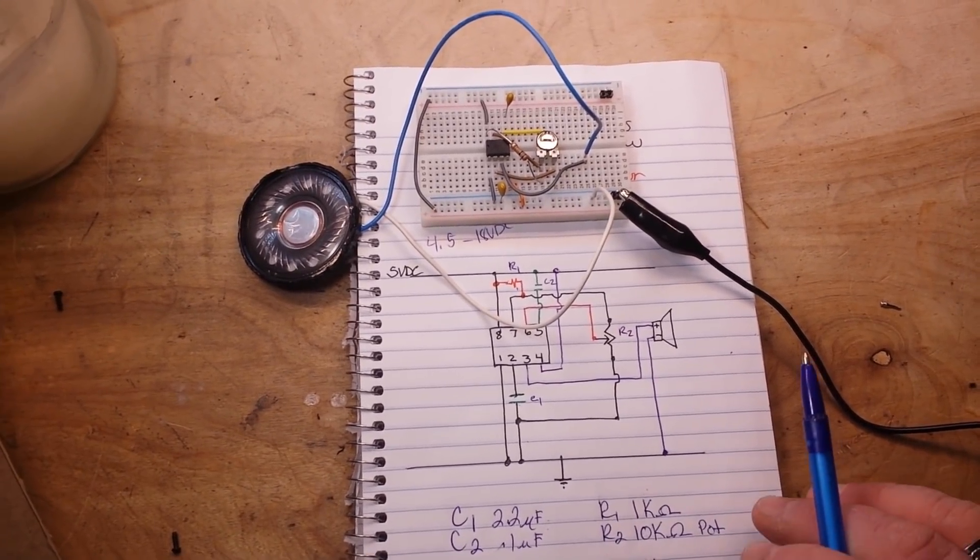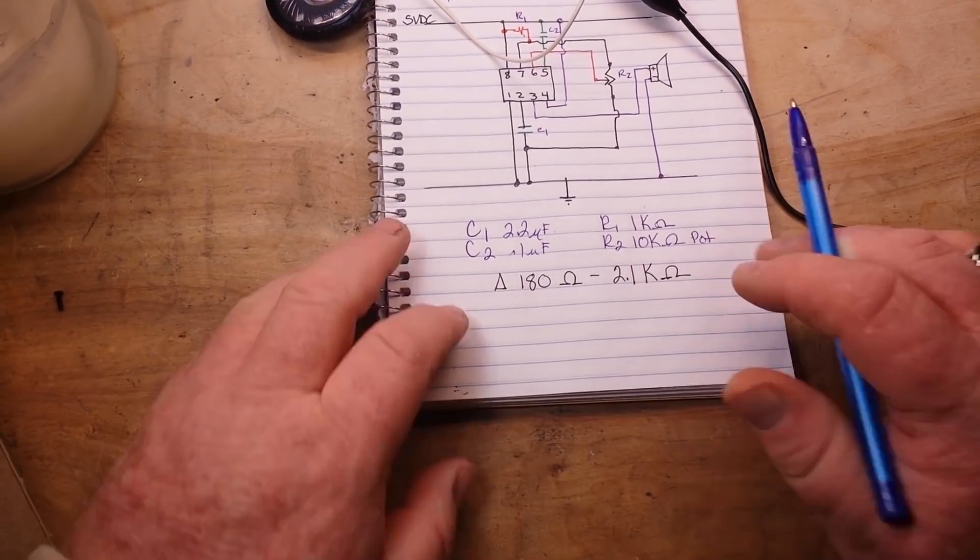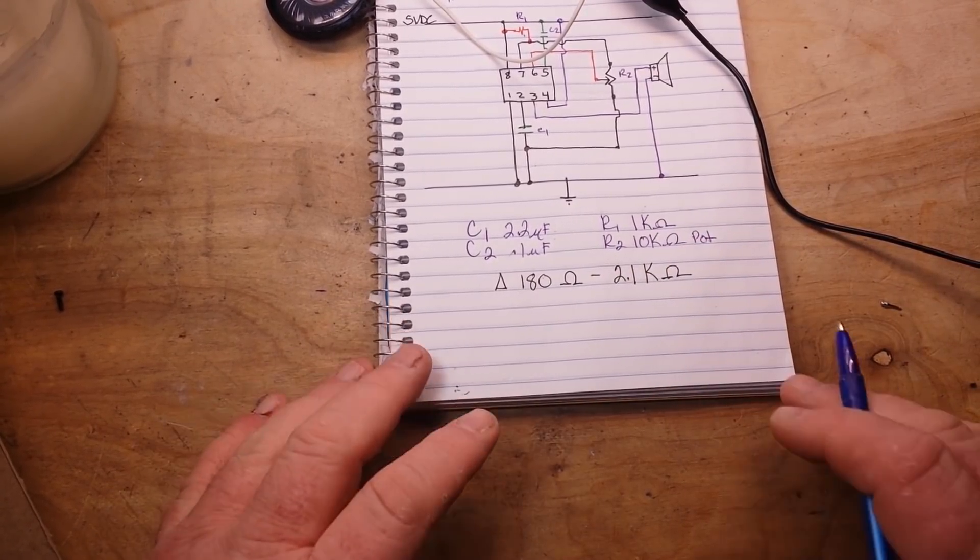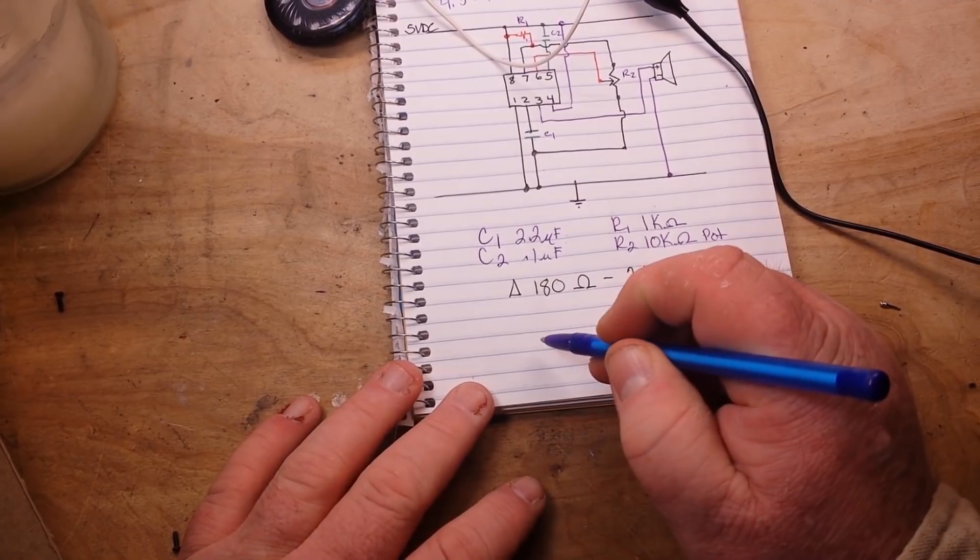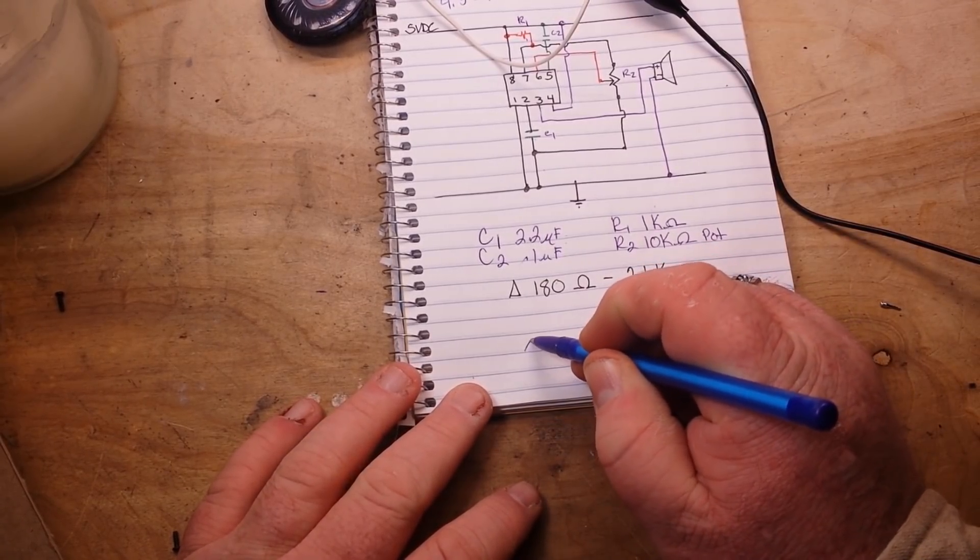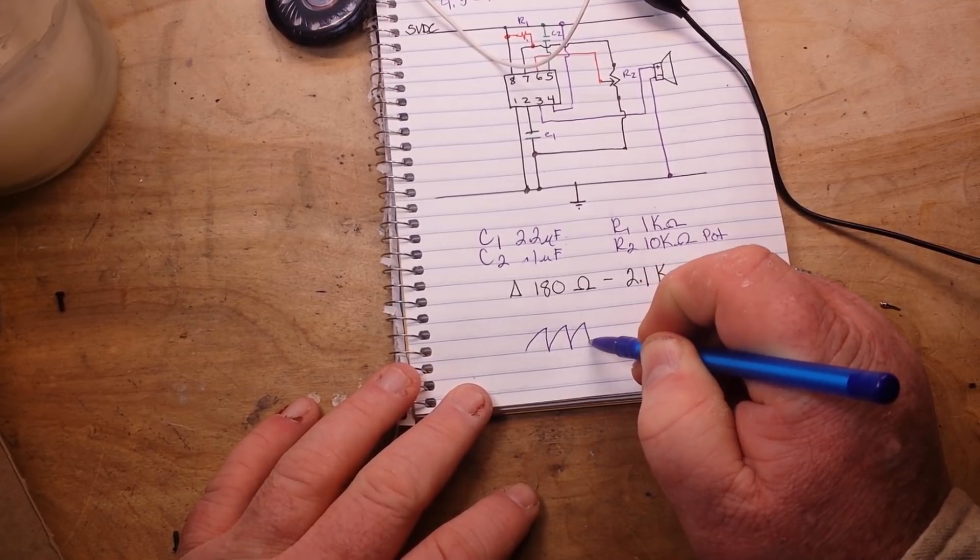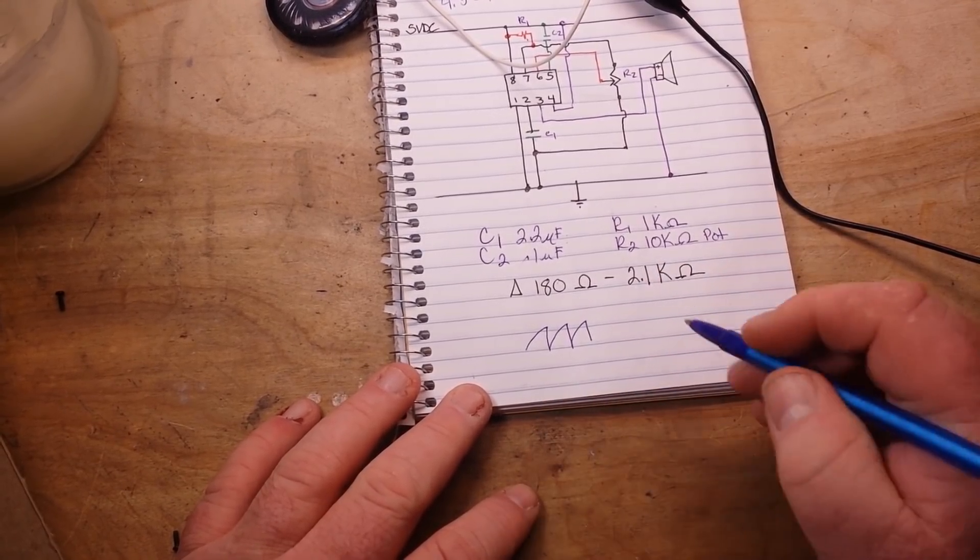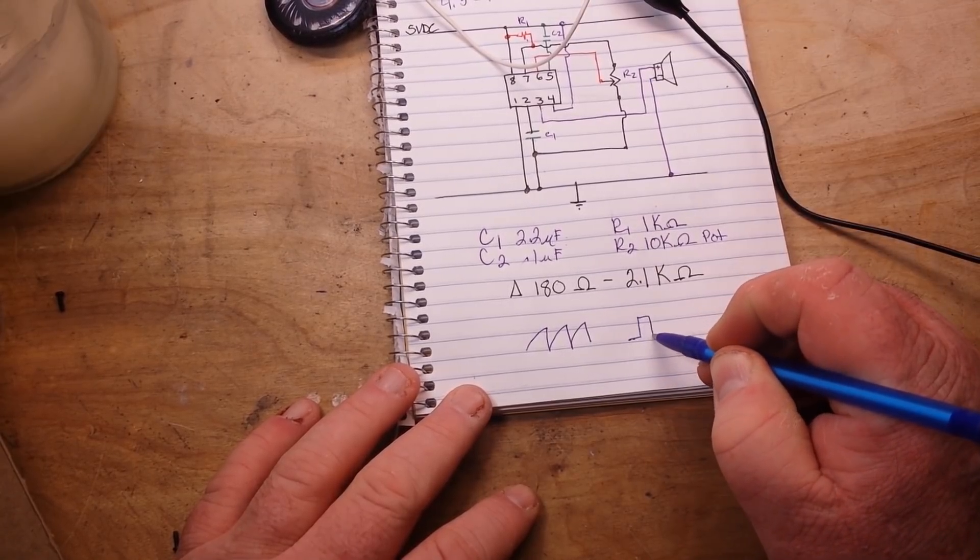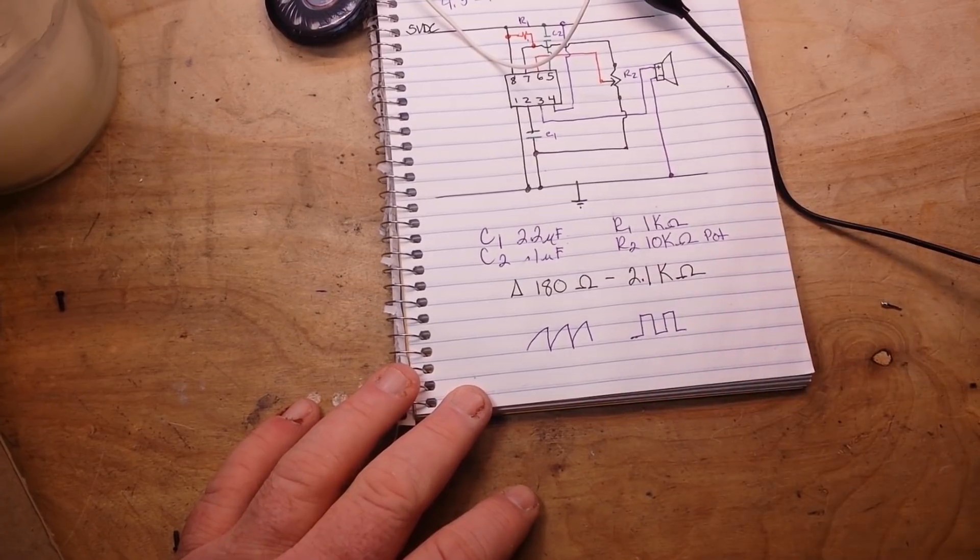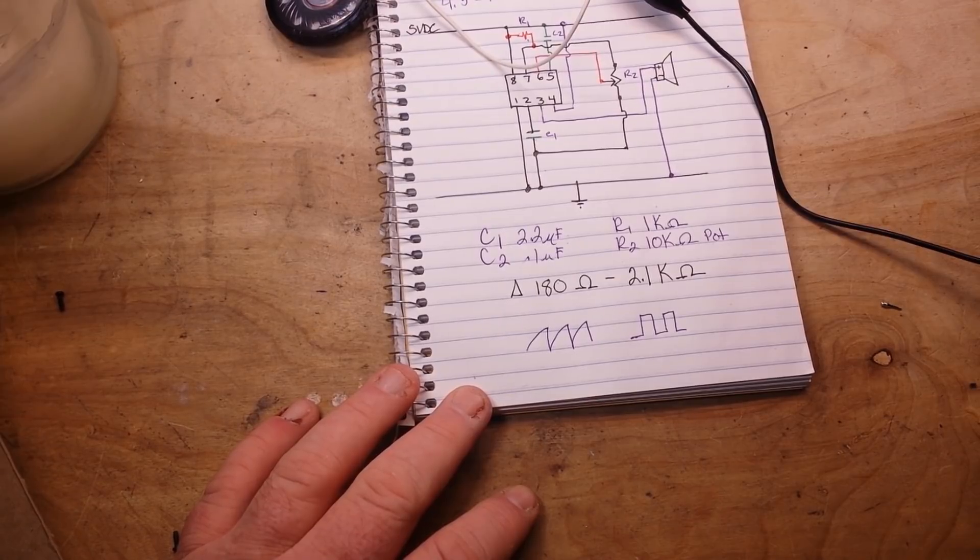Now here's something that you might be thinking to yourself. You might be saying well I know that the charge discharge of a capacitor looks more like this, whereas you're telling me the output of the 555 is a square wave. That's true and here's why: the 555 timer also acts as a schmidt trigger.